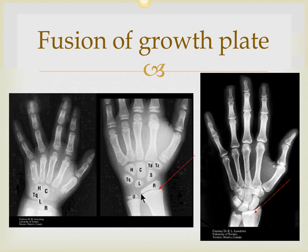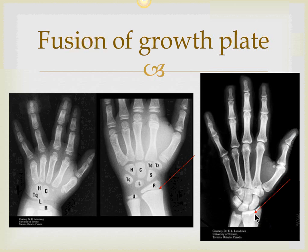By about age 18 in females and 21 in males, most bones have fused, though they all fuse at different times. Once fused, you see a complete bone with no spaces in between. This remaining mark is known as the epiphyseal line, which represents the area between the epiphysis and the diaphysis where the growth plate has fused.